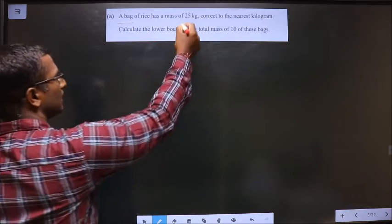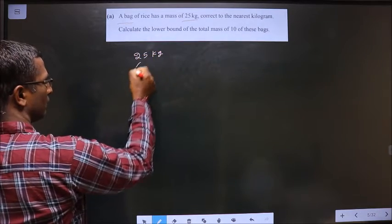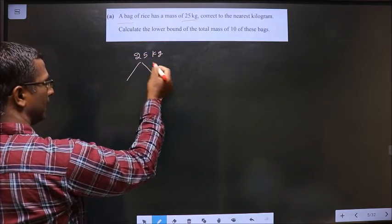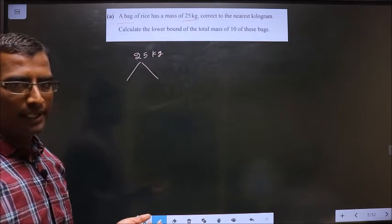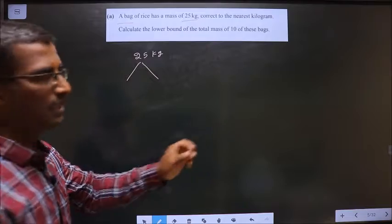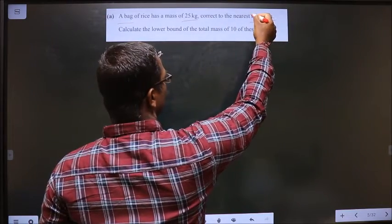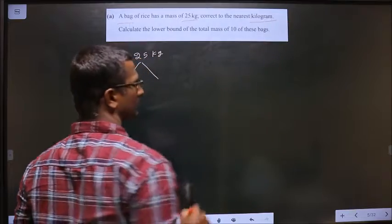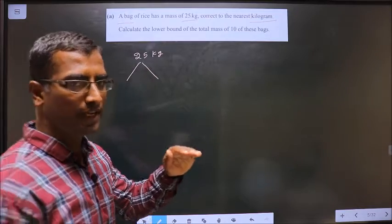Given number is 25 kg. Now, what should I subtract and add to get lower and upper bound? How do I decide? We decide in this way. It is correct to the nearest kilogram, that means 1 kg. So, it is nearest to whatever, you should do half of that.